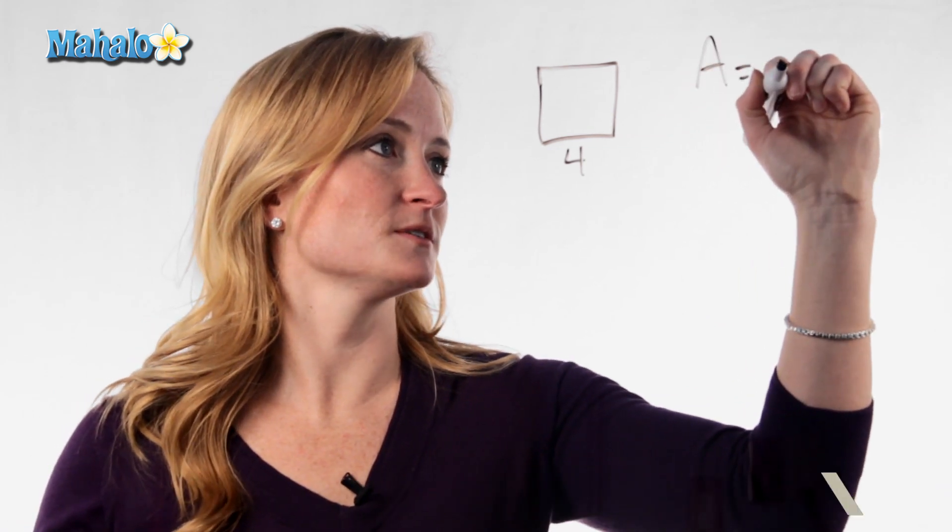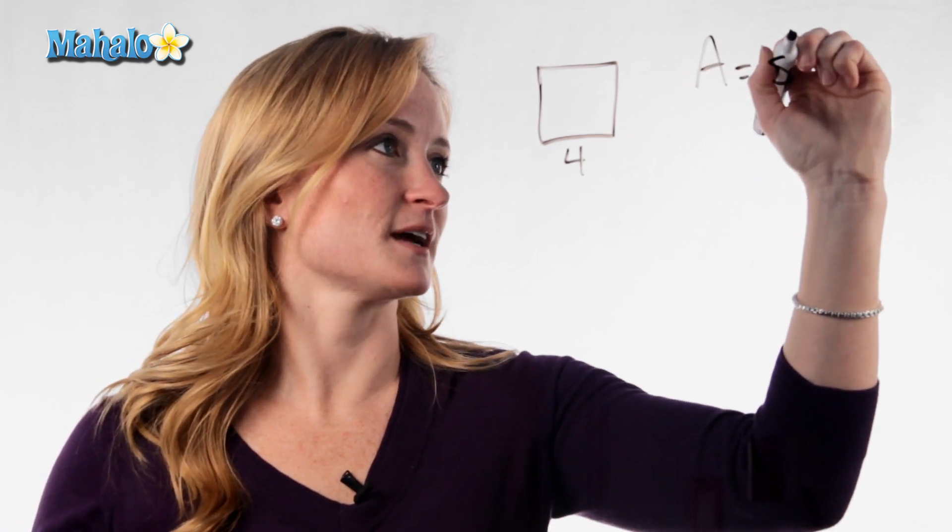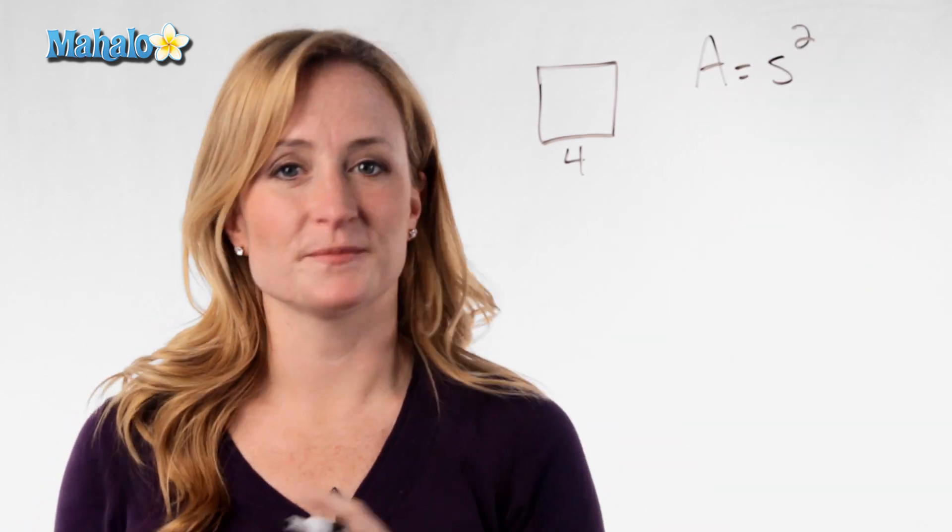Hi, this is Julie with Mahalo.com. We're going to discuss how to find the area of a square. The formula for area of a square is A equals side squared.